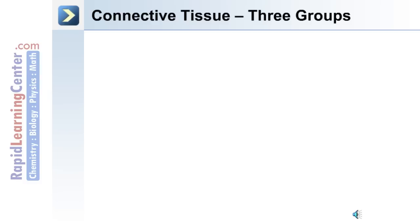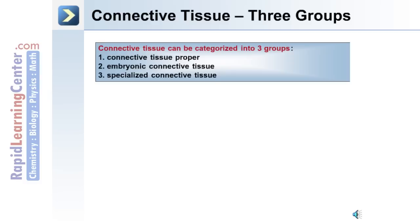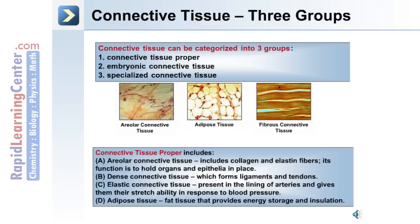There are three separate groups of connective tissue: connective tissue proper, embryonic connective tissue, and specialized connective tissue. Let's begin with connective tissue proper. This includes areolar connective tissue, which has collagen and elastin fibers, and they function to hold organs and epithelia in place.